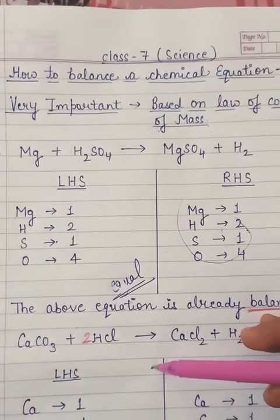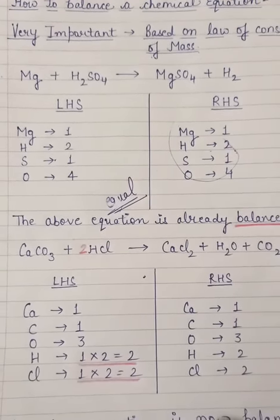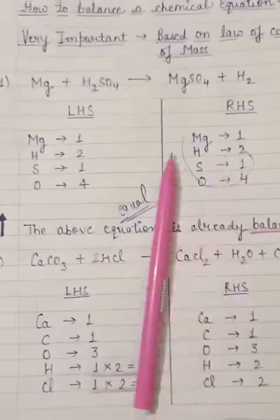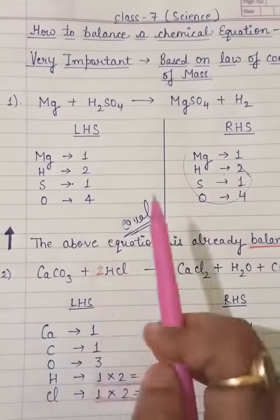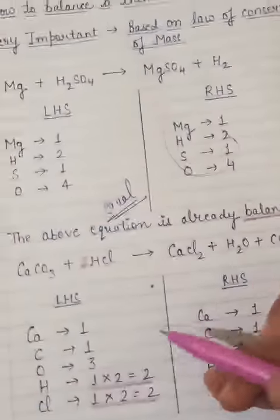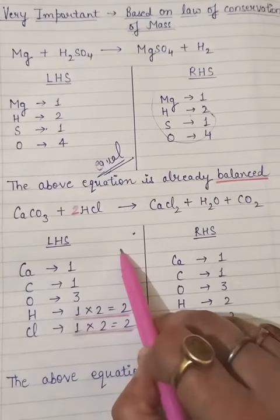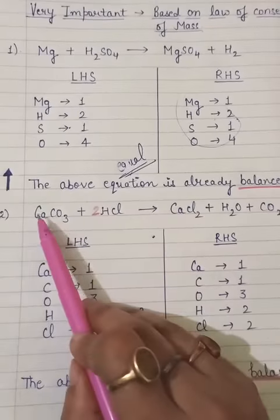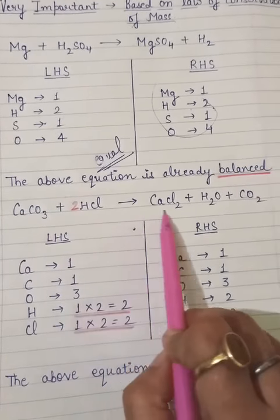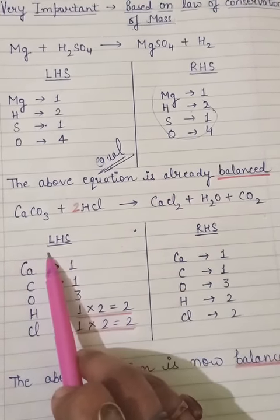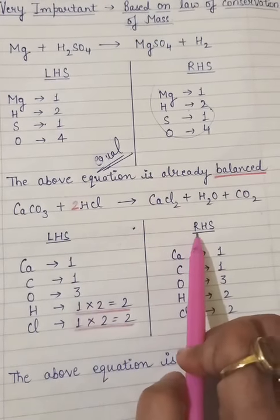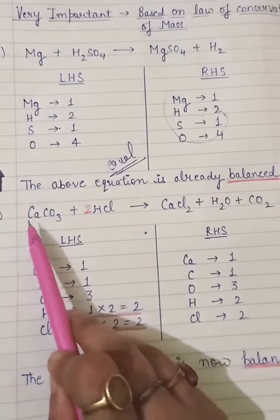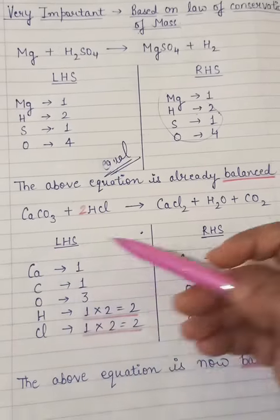So what exactly you have to do for balancing? You have to make the number of atoms equal on both LHS and RHS sides. The first example I took was very common and didn't require multiplication or any mathematical rule. Now we come to the second equation. The pen got twisted a bit but never mind, we will focus only on our concept.